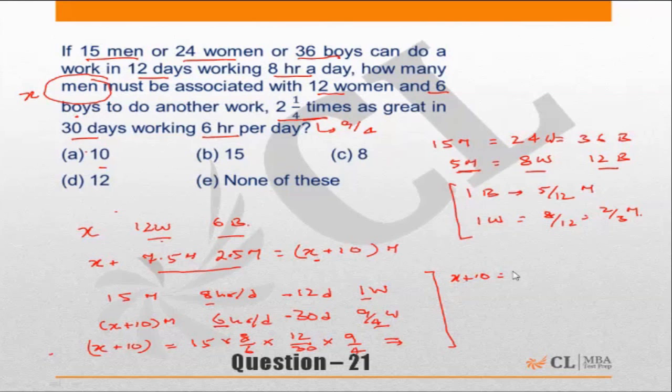This implies that x plus 10 is equal to 15 times 8/6 times 12/30 times 9/4. Simplifying: 4 into 8 is 2, 6 and 2 gives 3, 3 and 15 gives 5, 5 and 30 gives 6, which gives us 9 times 2 equals 18. So x plus 10 is equal to 18.